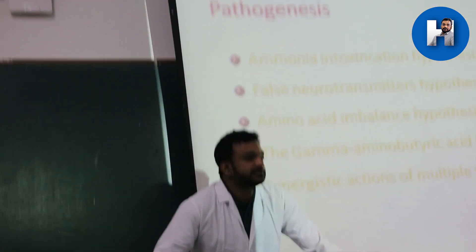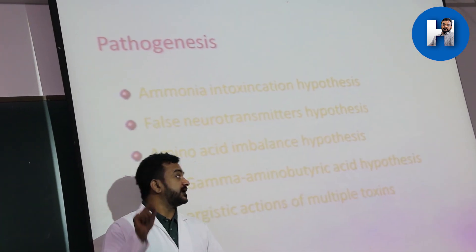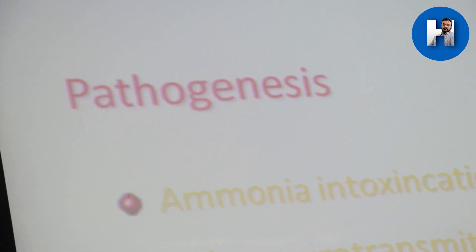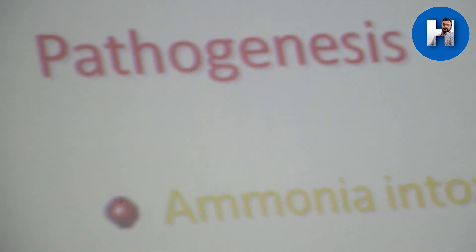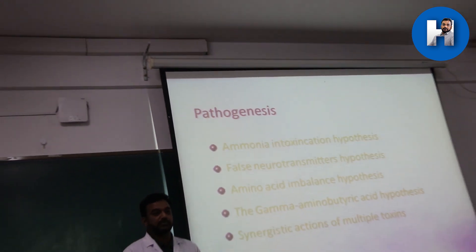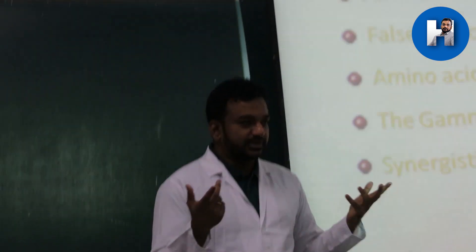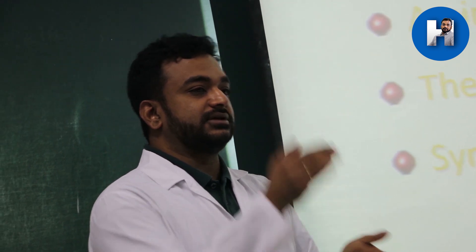Amino acid imbalance also contributes. Normally, branched-chain amino acids are about 3 to 3.5 times higher in plasma than aromatic amino acids. In liver failure, high circulating insulin - because the liver cannot break down insulinase - drives muscle uptake of branched-chain amino acids, reducing them. Aromatic amino acids therefore increase relatively, and since they are precursors of false neurotransmitters, false neurotransmitter production rises.